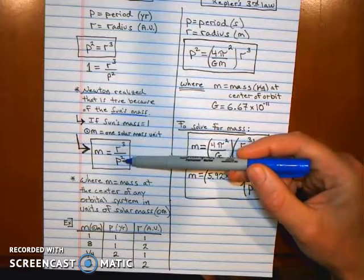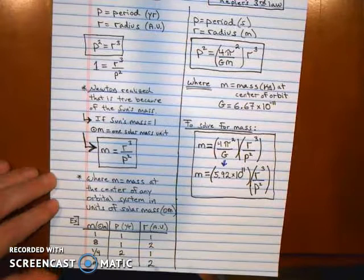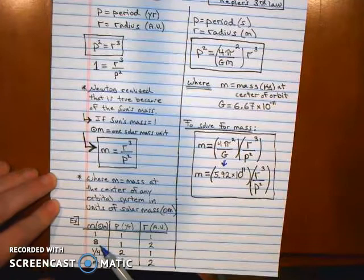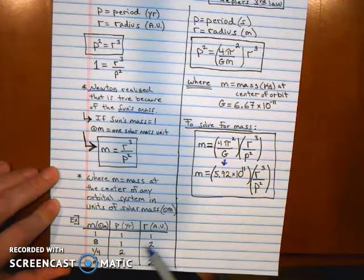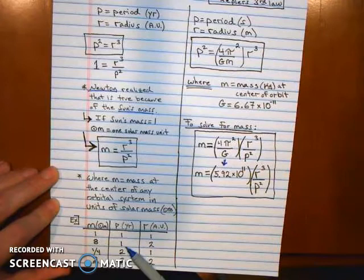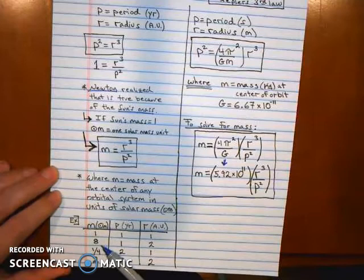Two cubed is eight, one squared is one. So this would be a star that has a mass of eight solar masses because any planet that's orbiting with a period of one year would have to be one AU away. So if it's twice as far away and it's moving that fast, well, then the star that it's orbiting must be much more massive.